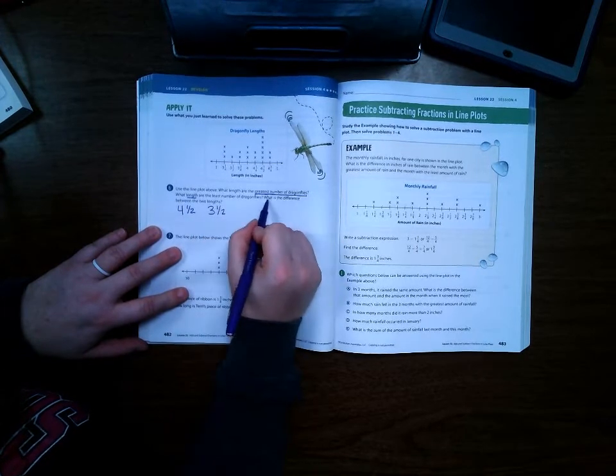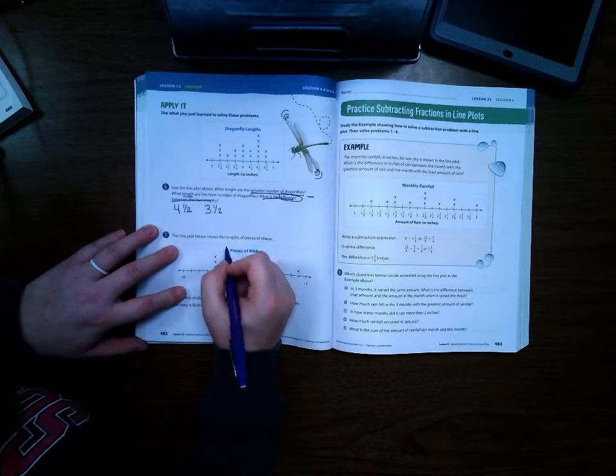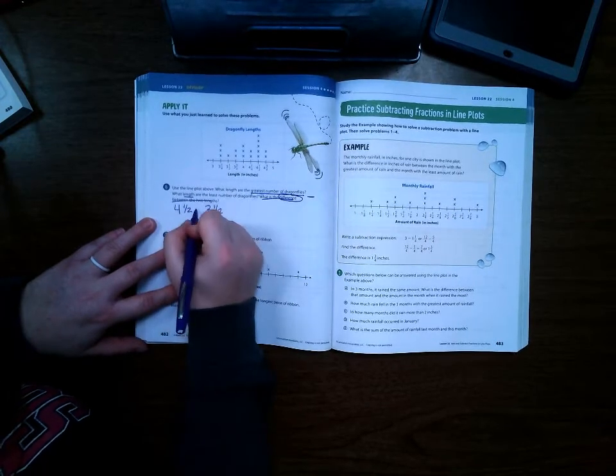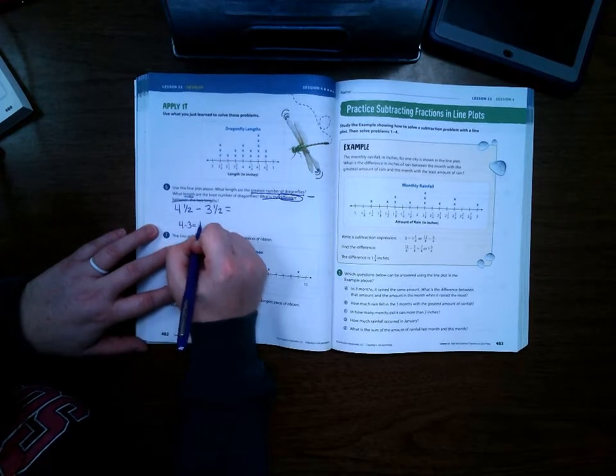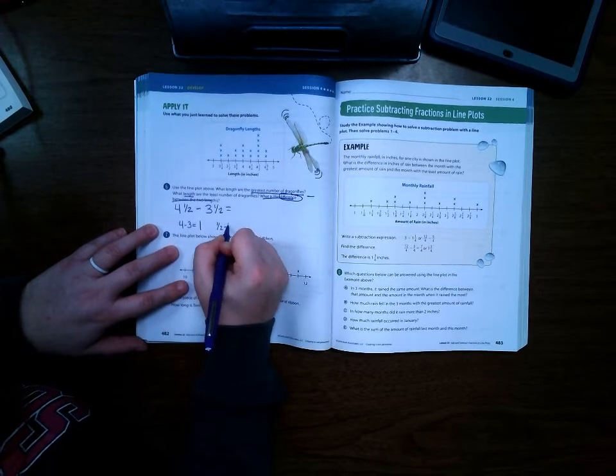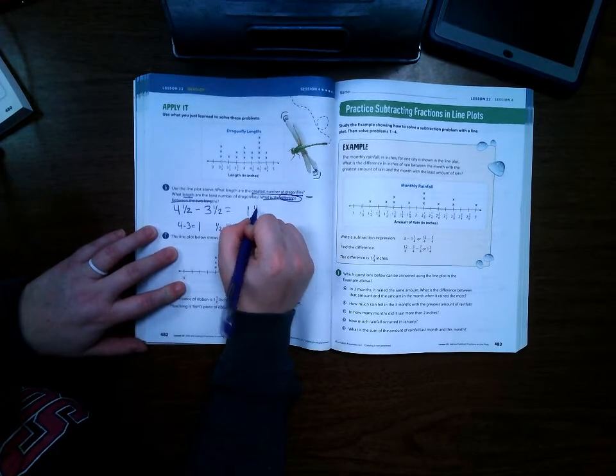It says what is the difference between the two? Difference is a key word for subtract. So we have the larger number minus the smaller number. 4 minus 3 is 1. 1 and 1/2 minus 1 and 1/2 is 0. So our answer is 1 inch.